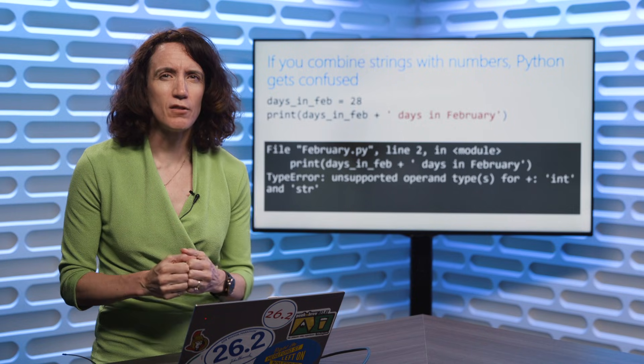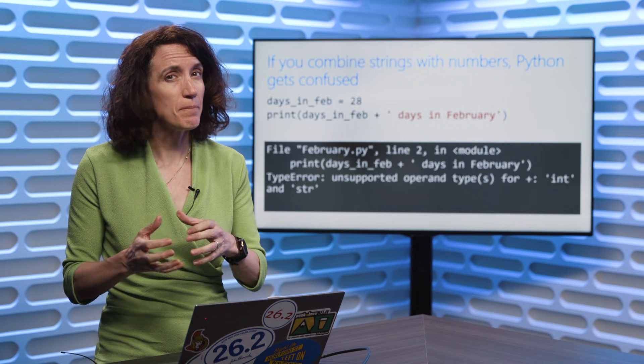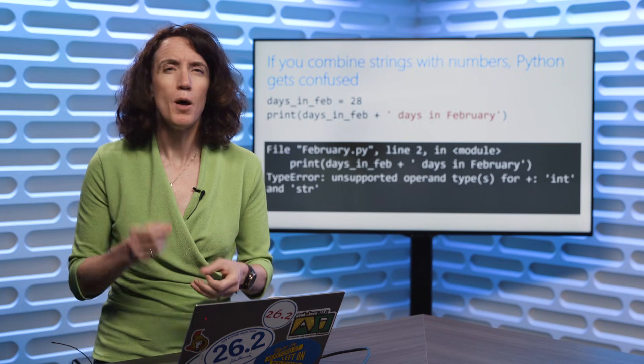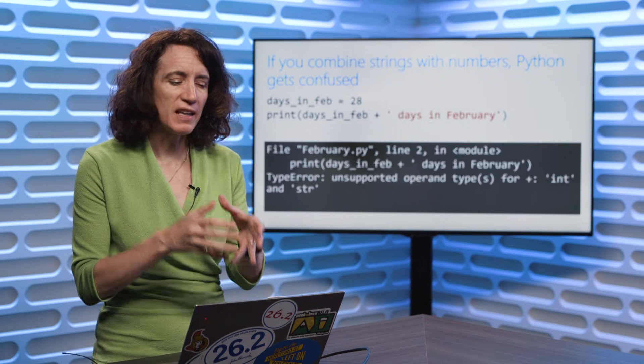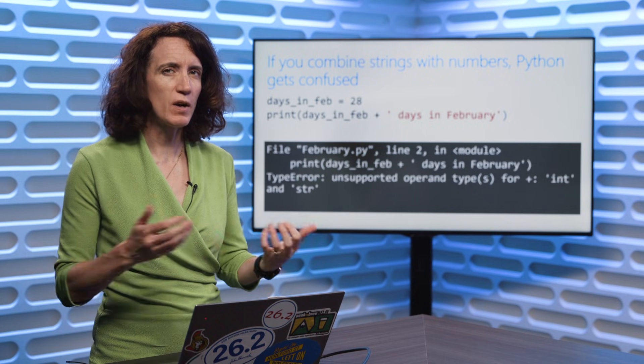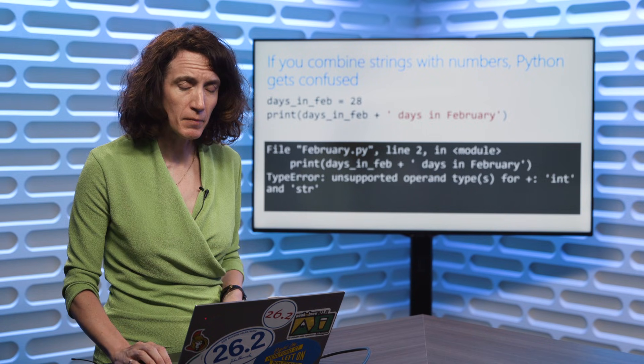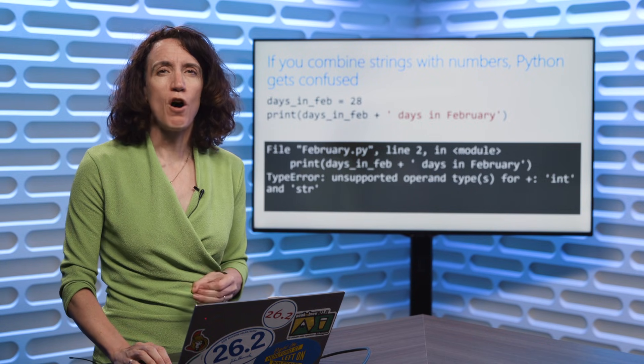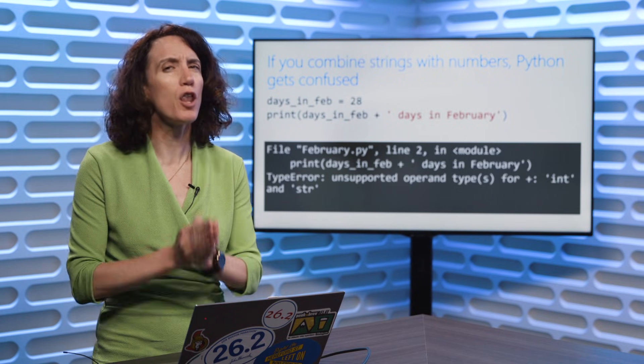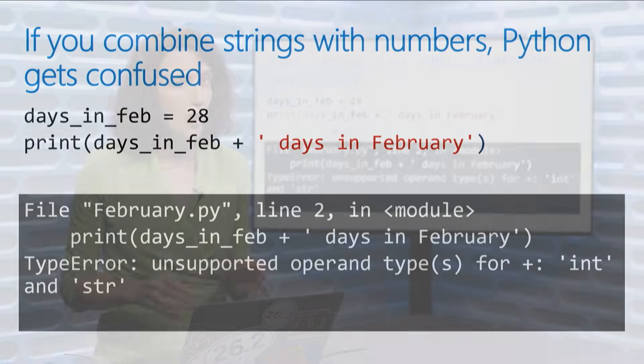So when you're working with Python, sometimes you have to tell it, I know that the days in February, 28 in this case is a number, but I want you to treat it like a string here. I want you to concatenate that number to the phrase days in February, so I see 28 days in February on the screen. So we have to do what's called type conversion. So get used to this, you're going to see it a lot in your code. It's going to come up all over the place.